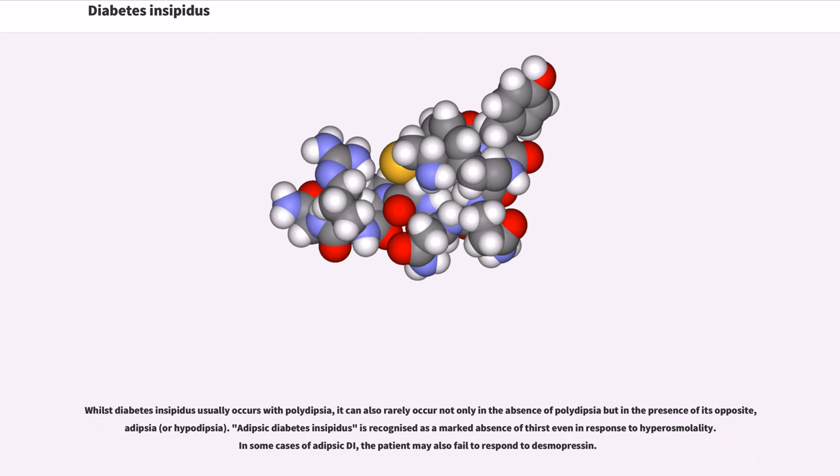Whilst diabetes insipidus usually occurs with polydipsia, it can also rarely occur not only in the absence of polydipsia but in the presence of its opposite, adipsia. Adipsic diabetes insipidus is recognized as a marked absence of thirst even in response to hyperosmolality. In some cases of adipsic DI, the patient may also fail to respond to desmopressin.